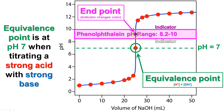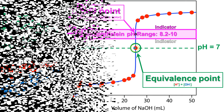What we're really trying to do is find that equivalence point. You might be thinking: if the equivalence point is at pH 7, why use phenolphthalein with a range of 8.2 to 10? The reason is that the difference between the equivalence point and the endpoint is going to be like a tenth of a drop. The pH changes so rapidly in that section that the endpoint and the equivalence point overlap, and they're essentially half a drop apart — so we use them together.